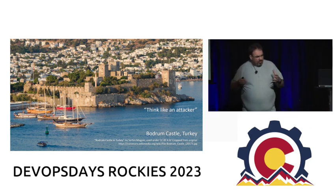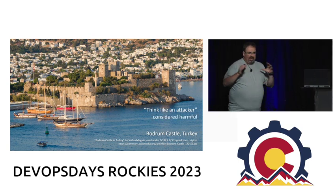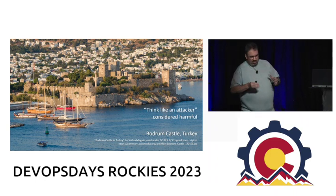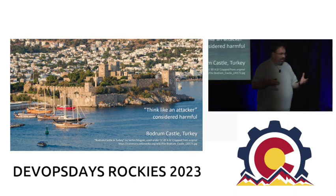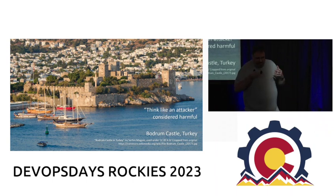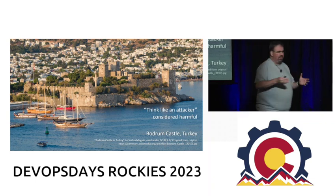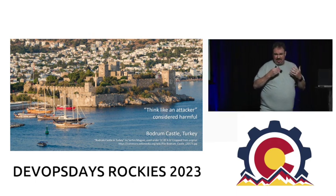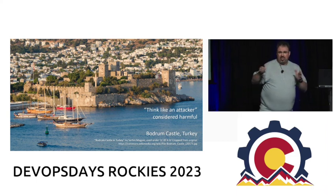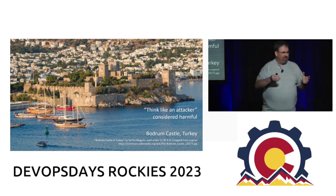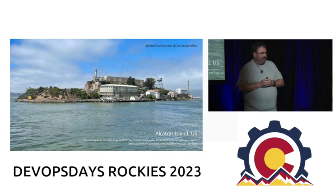A lot of times we talk about thinking like an attacker when doing threat modeling, but the reality is that's often considered harmful for a couple of reasons. One is if we were attackers we wouldn't be doing the threat modeling, we'd be doing the attacking. Also, if we try to guess, we're going to pigeonhole ourselves - we're not going to think about all the different ways something could be attacked, just the one that's obvious to us as a non-attacker. What we'll do in threat modeling is break down the pieces, look at each component, figure out how we can get in through that, and then assess the risk involved.